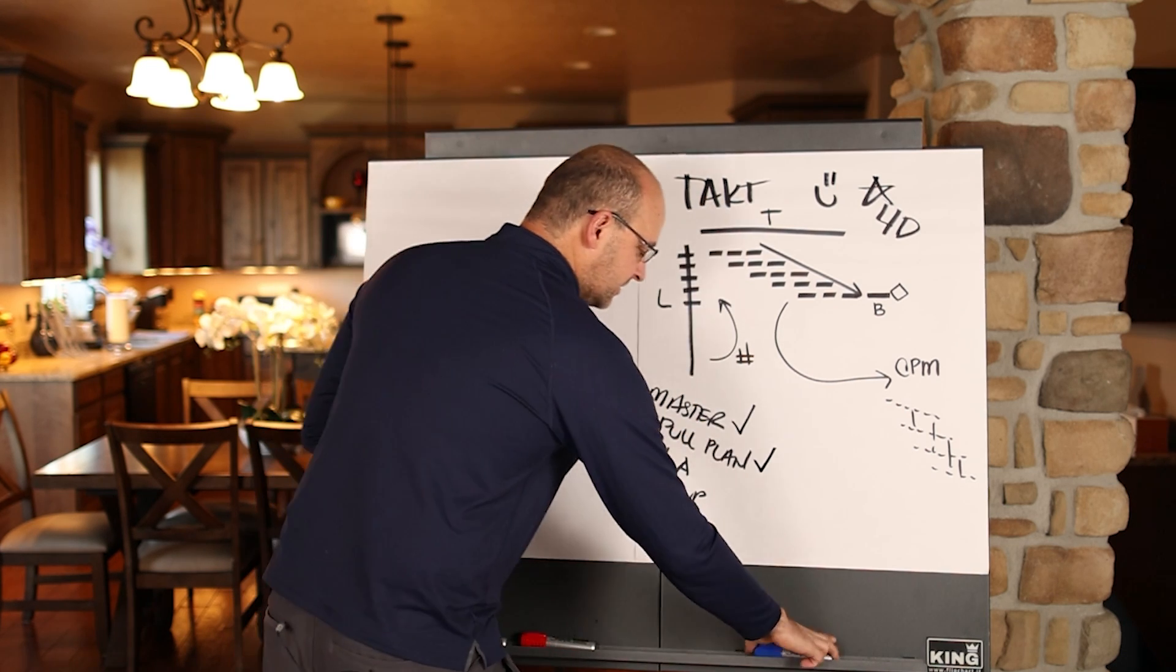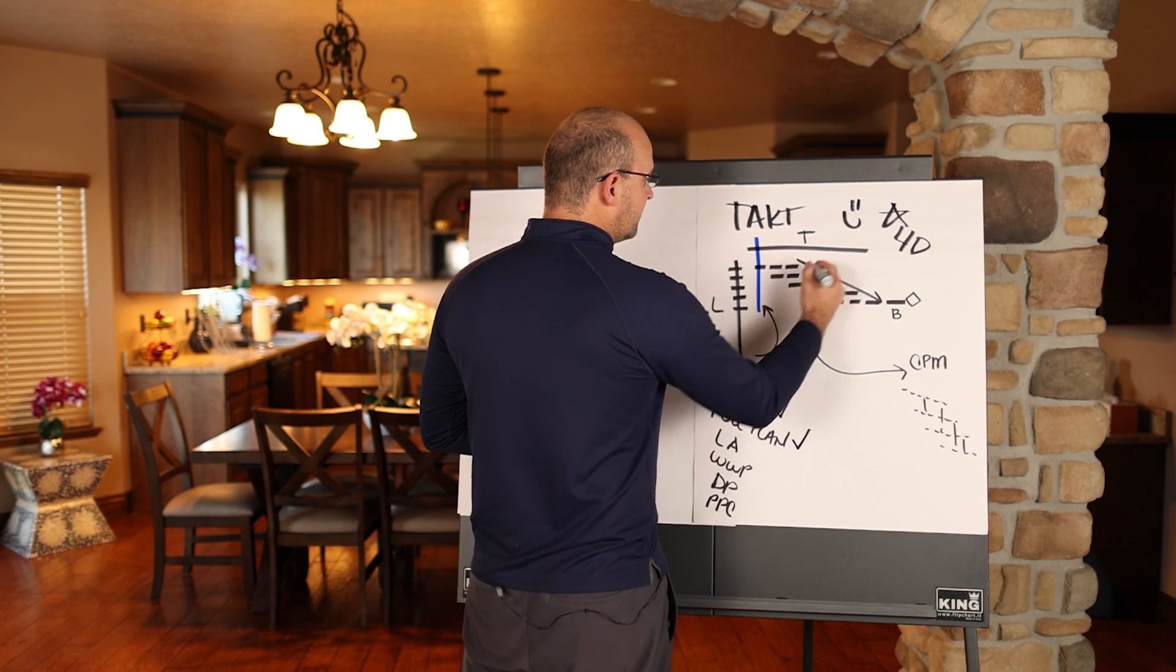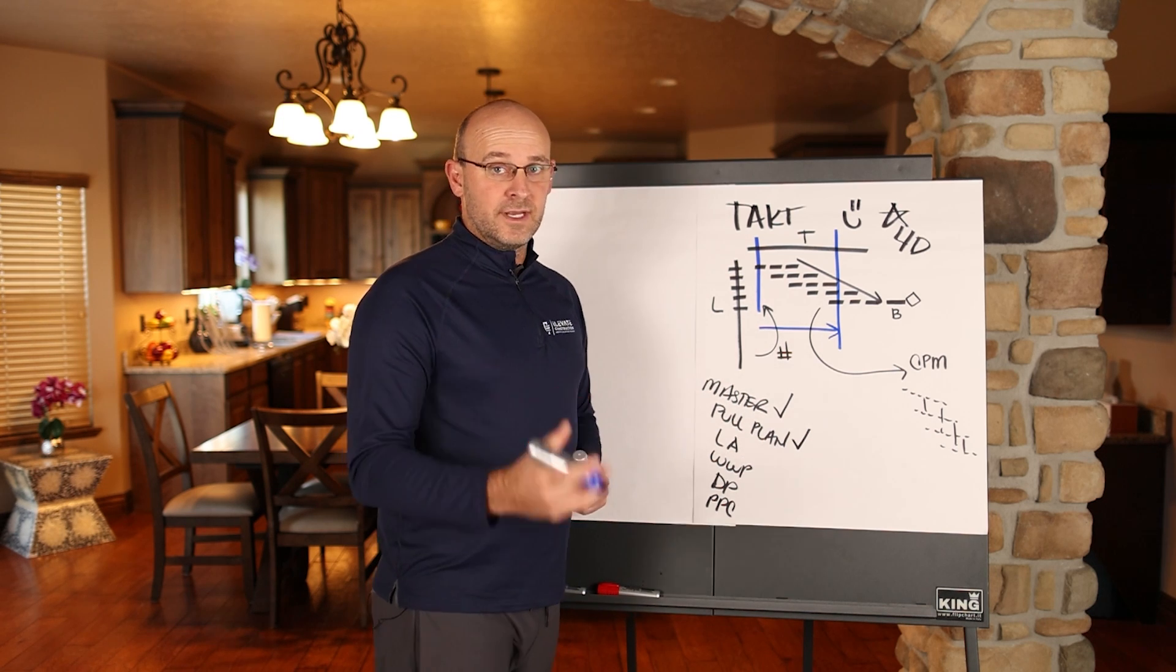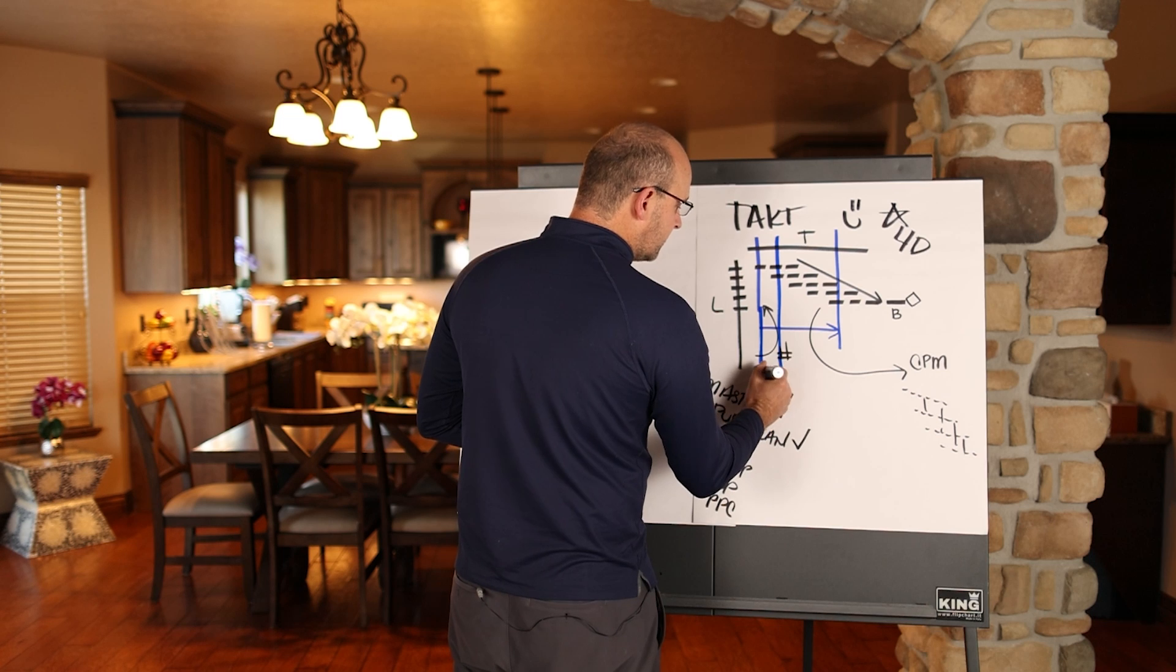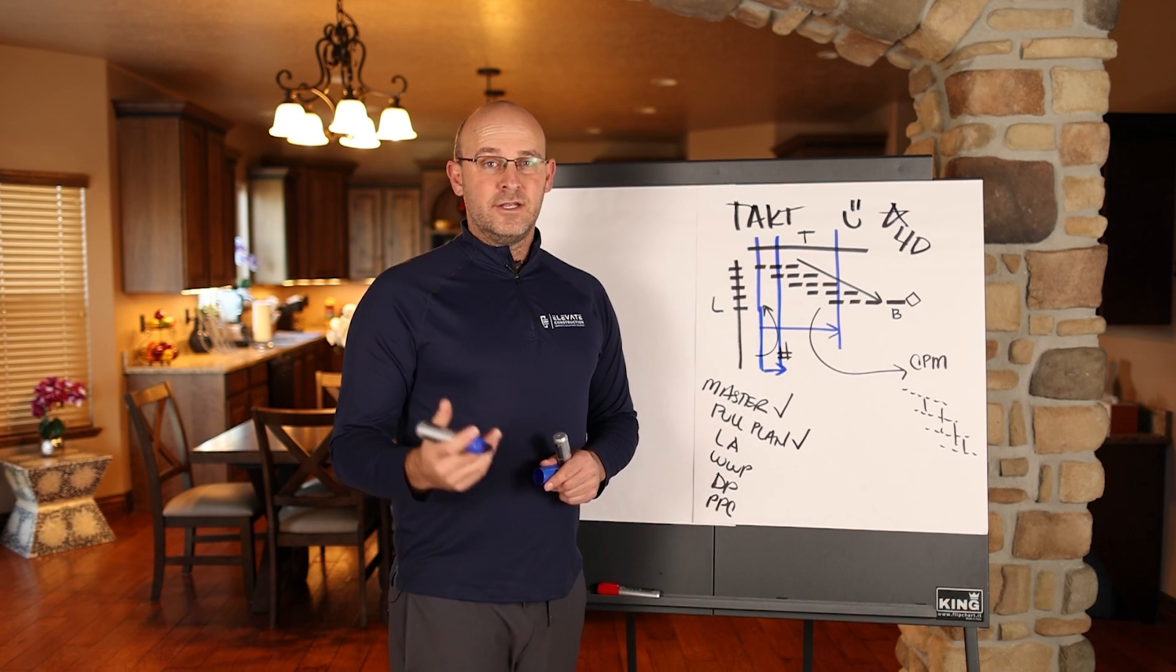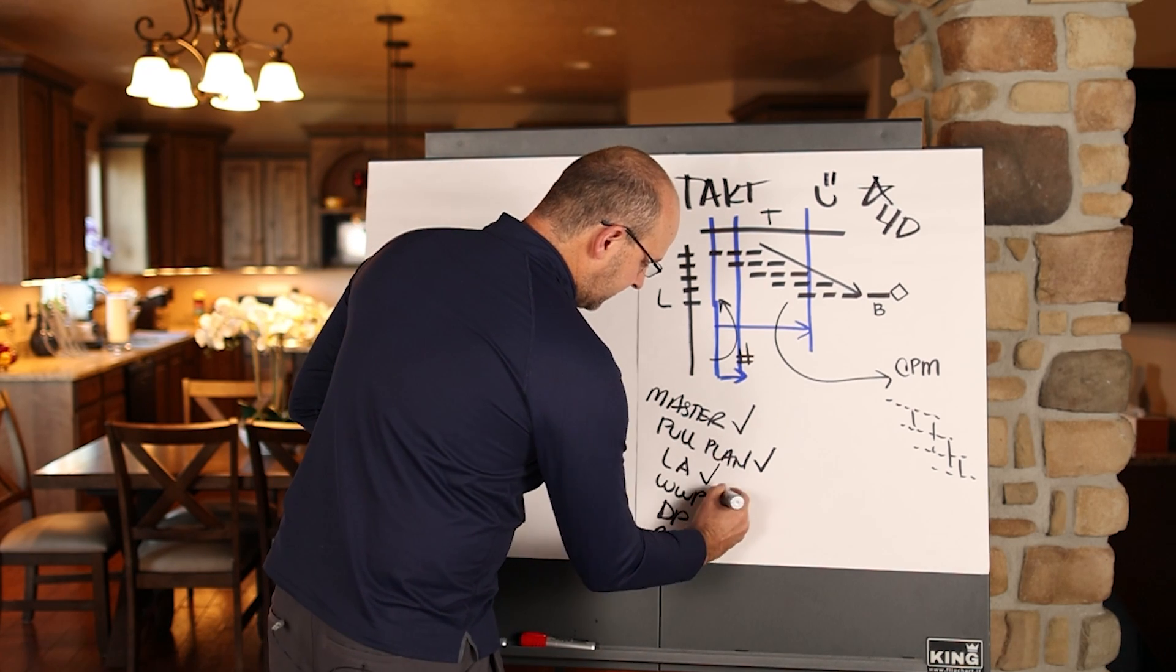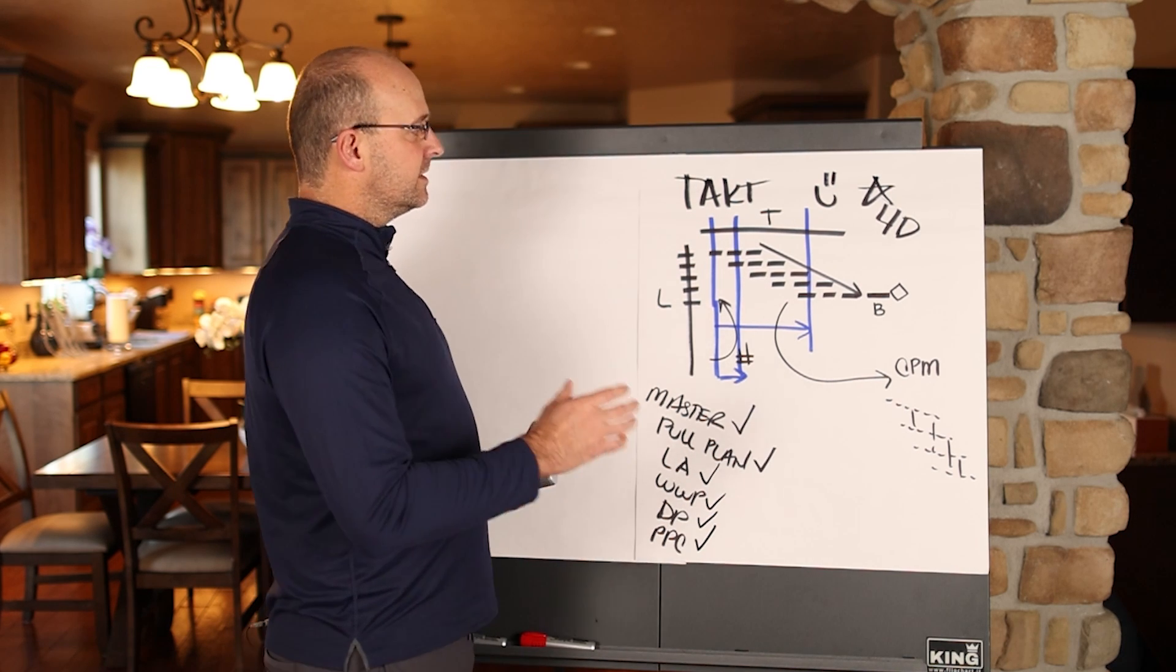And then your look ahead, if I'm going to draw this, let me just use a blue marker here real quick. If I'm going to draw this, your look ahead is filtered right off of the schedule. So you can see out and identify roadblocks and make work ready. And then your weekly work plan is filtered out similarly, where you get trade buy-in and commitment, and you make the plan for the next week. From that, when you execute those activities, you 100% can make your day plan and track percent plan complete. So this is a holistic system.